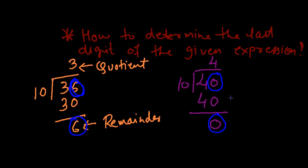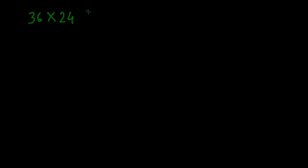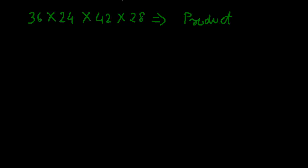Once you understand this, it becomes really easy to determine the remainder of any expression. Say you have an expression: 36 × 24 × 42 × 28. These are some random numbers I have chosen to form an expression, and you need to determine the last digit of the product. You could simply multiply all of them and see the last digit, but the problem with that method is it is always going to take a long time and would be least efficient.